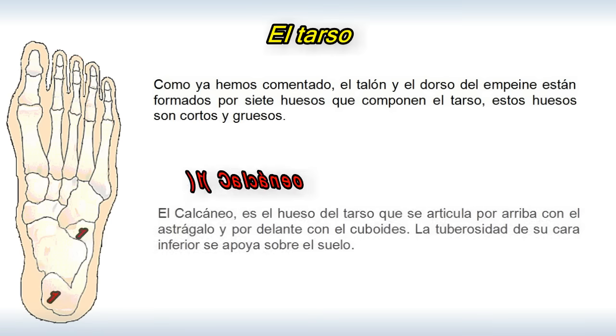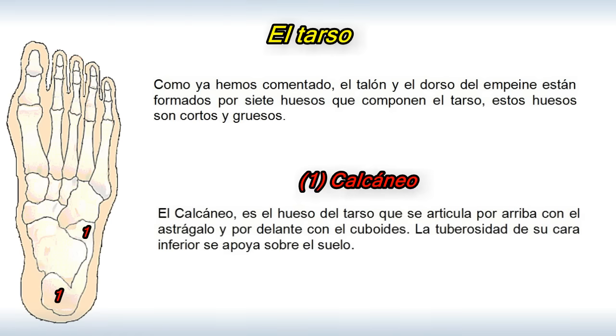El calcáneo. Es el hueso del tarso que se articula por arriba con el astrágalo y por delante con el cuboides. La tuberosidad de su cara inferior se apoya sobre el suelo.